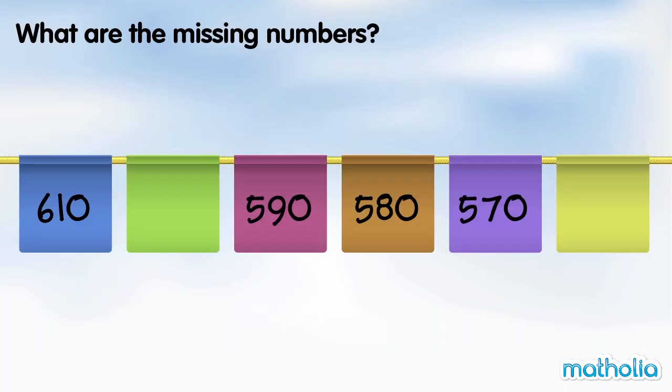What are the missing numbers? 590 minus 10 is 580. 580 minus 10 is 570. In each step the numbers go down by 10.